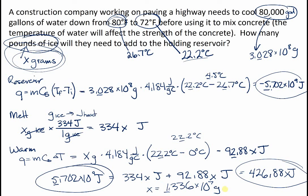So 1.336 times 10 to the 7 grams - and just for reference this ends up being about 30,000 pounds. So this construction company is going to need about 15 tons of ice to dump into the reservoir and then wait a little while and it should cool off by approximately 4.5 degrees Celsius to give them their cool water to mix their concrete.